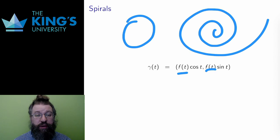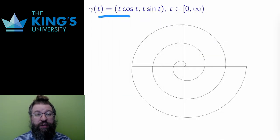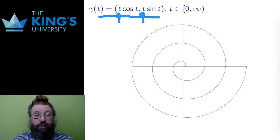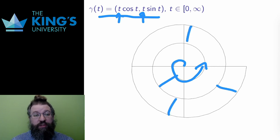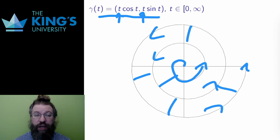This is the Archimedean spiral. The function in front of sine and cosine is just t. This is a linearly increasing radius. As the curve goes around the circle, the radius grows at a steady rate. The arms of the spiral are equally spaced to show that steady rate of increase. The path of the curve is going around the spiral counterclockwise, further and further outwards.